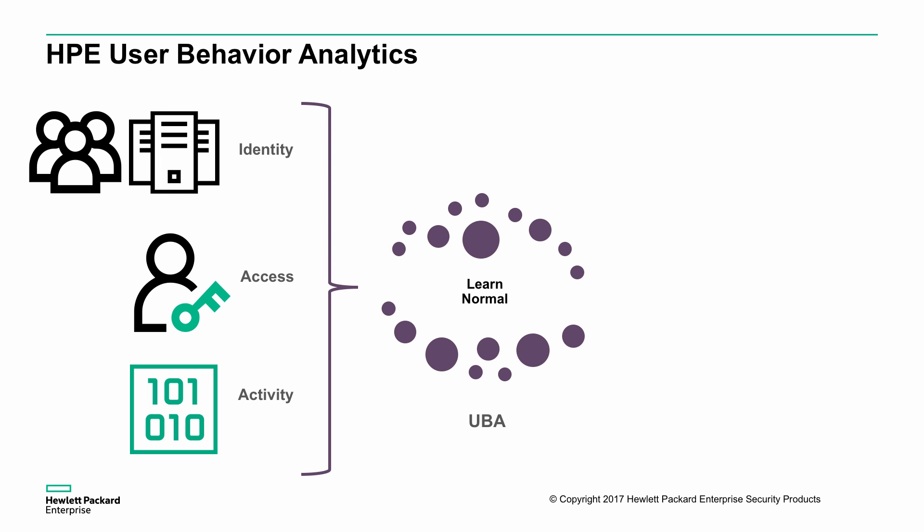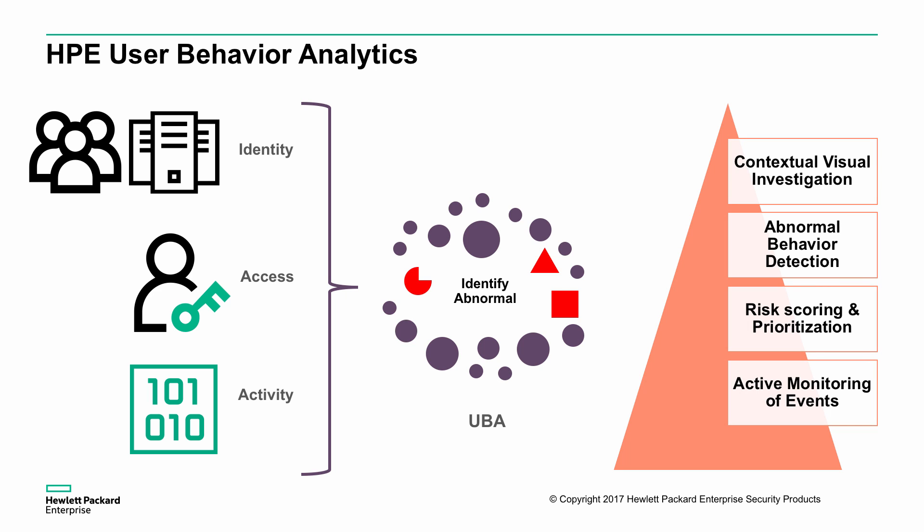That allows us to define and understand through UBA — through user behavior analytics — what the normal set of activities are. We learn what is normal, and then identify what's abnormal. That's the good bit: identifying the unusual, the unknown, the things we aren't already aware of. Using that helps us prioritize the risks, identify abnormal behavior, and use a contextual visual investigation capability to understand how a user did things — how they walked through applications, what access rights they increased or decreased, and what activity that physically mapped to. That's what UBA provides as a capability.